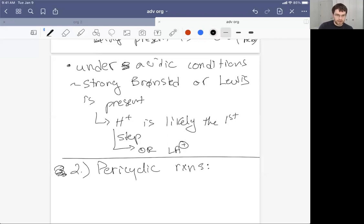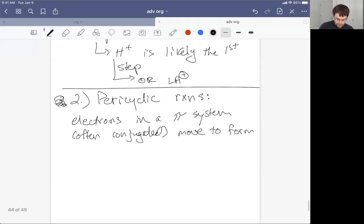Pericyclic reactions are—what happens here is electrons in a PI system, often conjugated PI system, move to form sigma bonds. It's actually kind of a flimsy definition. Pericyclic reactions are, in my view, a little bit cumbersome to try to define.